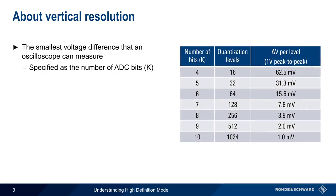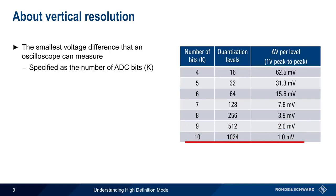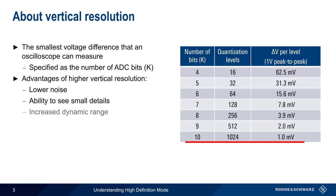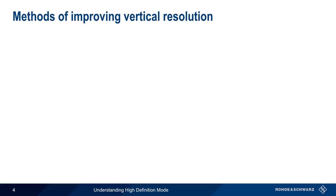Increasing the number of ADC bits increases the vertical resolution. Using a 1-volt peak-to-peak sinusoid as an example, an 8-bit ADC would have a vertical resolution of approximately 3.9 millivolts, but vertical resolution improves to approximately 1 millivolt for a 10-bit ADC. There are many advantages to increased vertical resolution, such as lower noise, the ability to see small signal details, greater dynamic range, and improved measurement repeatability.